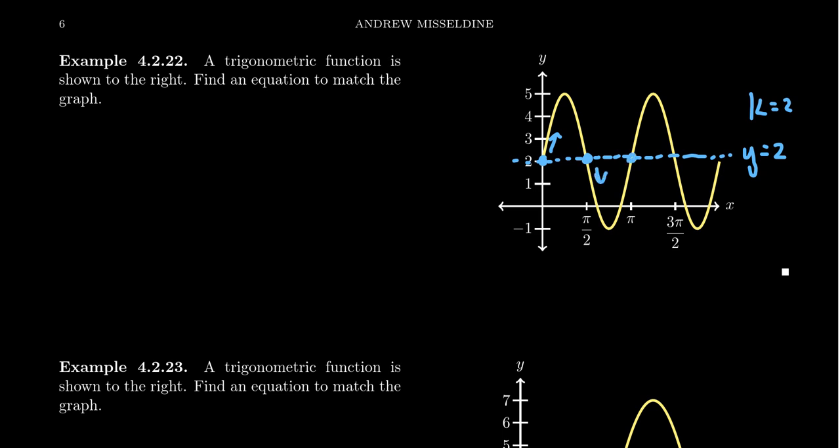This right here is one complete cycle and there's a lot of information we get from this. First of all, the fact that it goes up then down and it starts on the midline makes me think that this is a sine function. Yes, you could do cosine, but we want to avoid horizontal shifts as much as possible. So I'm going to base this around a sine. It's a sine that has no reflection because it starts off by increasing.